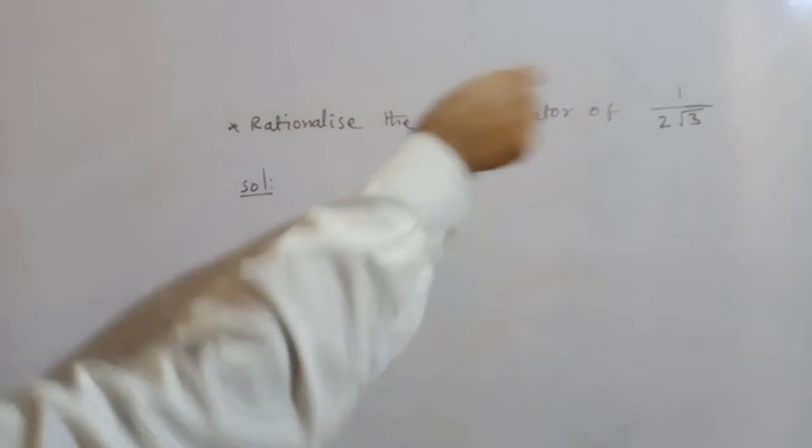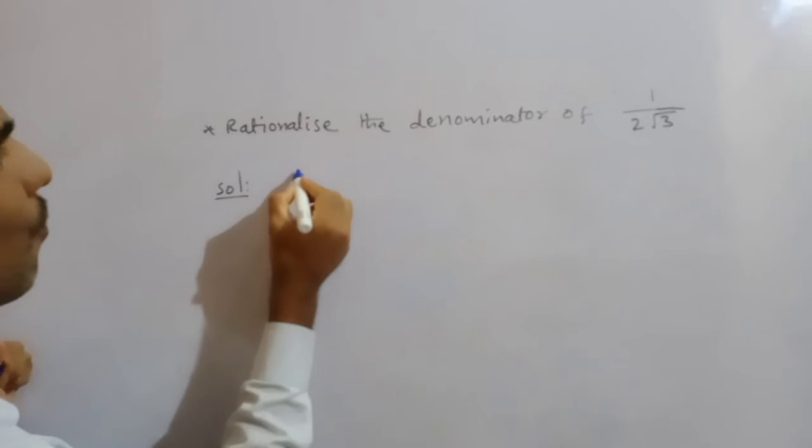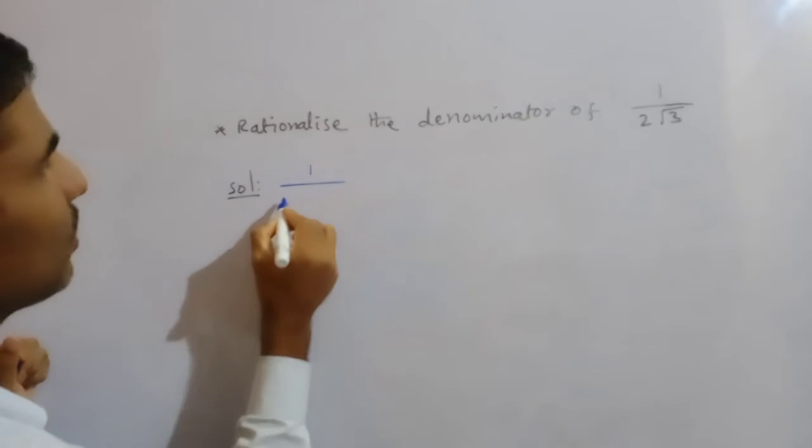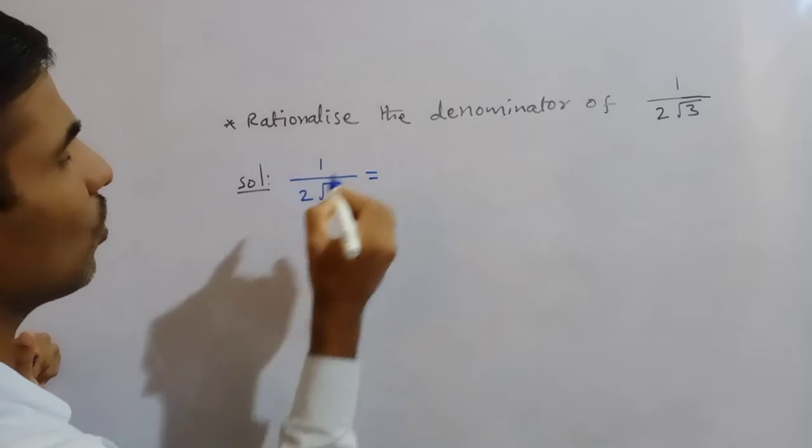First here, what are they given? That will you take ma. First, what are they given here? 1 divided by 2 into root 3 equal to...